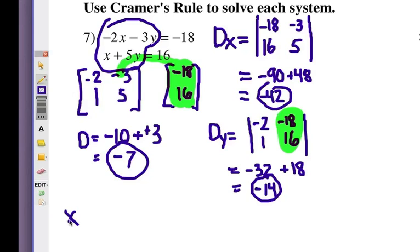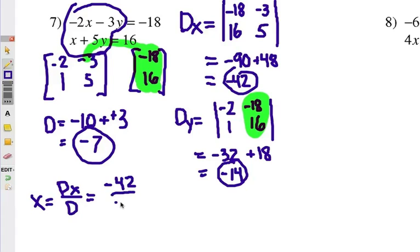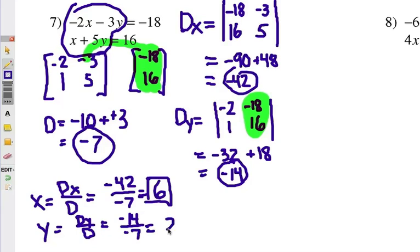To actually get our x value, we're going to take the determinant of the x value, and divide it by the determinant. Which is negative 42, divided by negative 7. And that will be positive 6. The y value is going to be the y determinant, divided by the coefficient determinant. Which is negative 14, divided by negative 7. Which, of course, is positive 2. Now when we solve a system of equations like this, you know that the answer is sometimes expressed as an ordered pair. So what's the x solution? Positive 6. What's the y solution? Positive 2. That's where the 2 lines would intersect on a graph.